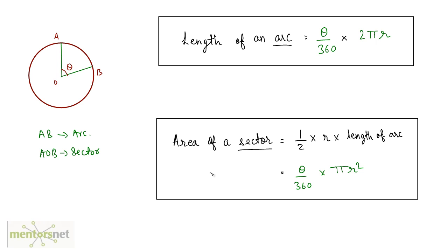Now what is the area of a sector? And that's half into the radius into the length of an arc. Something similar to triangles, half into base into height. That's half into radius into the length of the arc. Now that's basically if you put these values here, you get theta by 360 times pi r square.